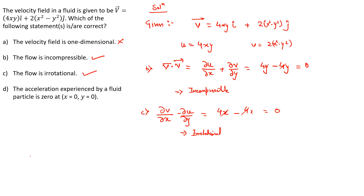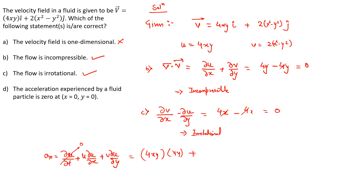Now let's find the total acceleration. The x-component ax = ∂u/∂t + u(∂u/∂x) + v(∂u/∂y). Since the flow has no time component, ∂u/∂t = 0. With u = 4xy, ∂u/∂x = 4y; and with v = 2x² - y², ∂u/∂y = 4x. At (0, 0), substituting x = 0 and y = 0 gives ax = 0.